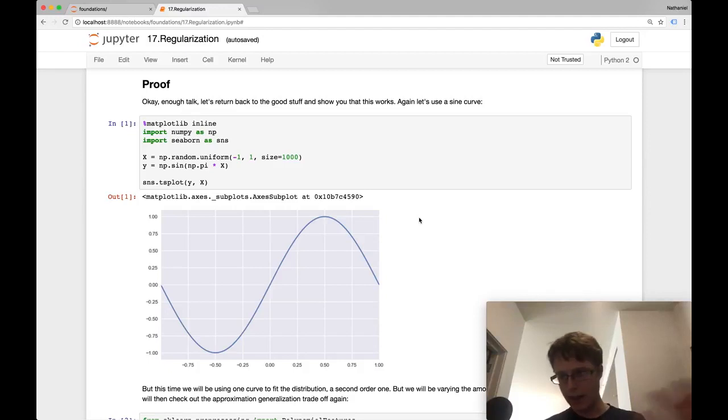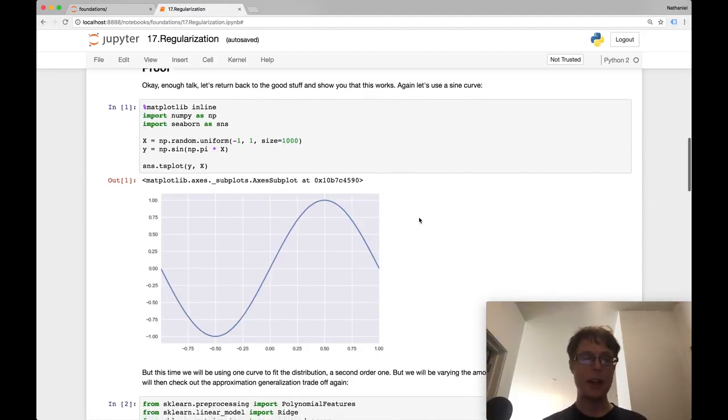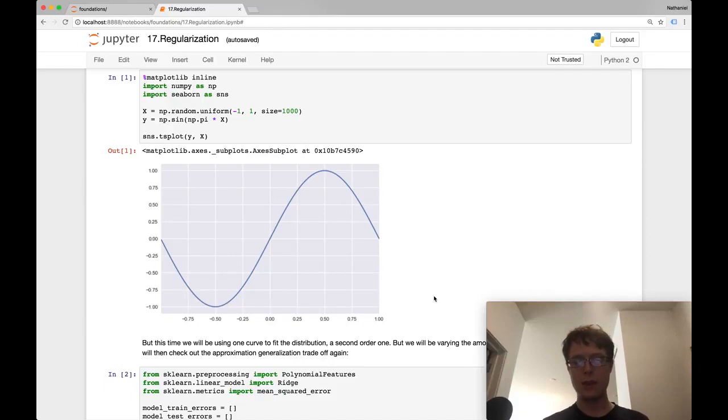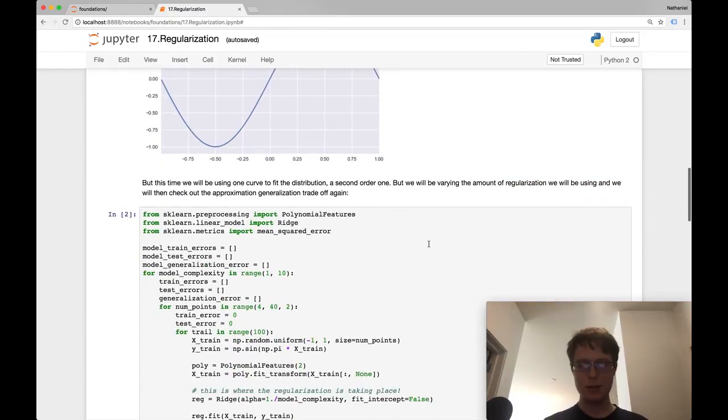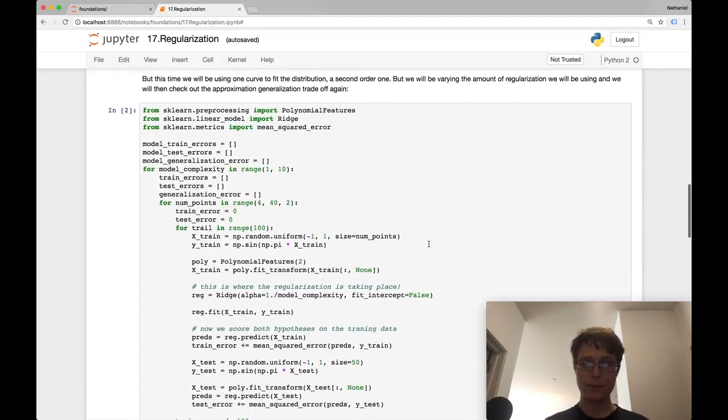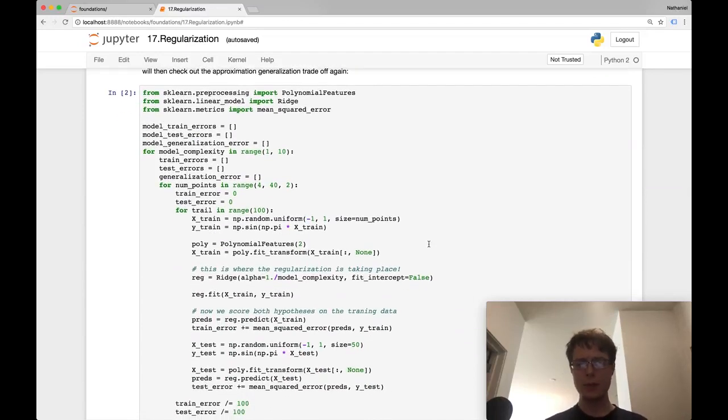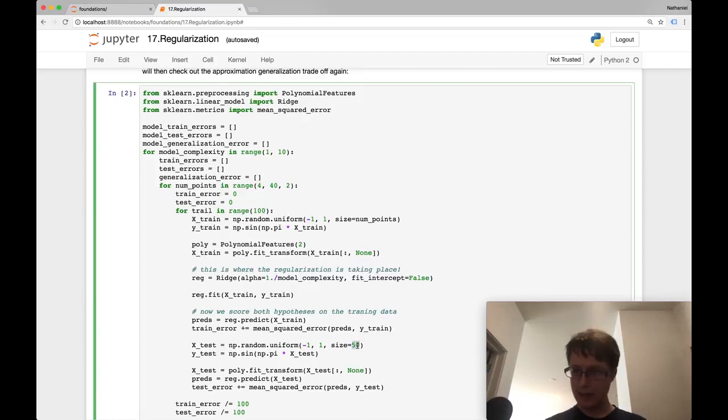We're back to our normal data set. We've got a sine curve. The x's go from negative one to one, the y's go from negative one to one. Let's fit some models. I'm fitting it on 50 data points and then testing it on data points to get the approximation error and generalization error as well as test error.